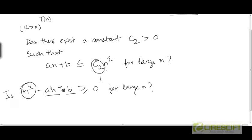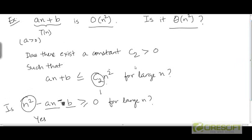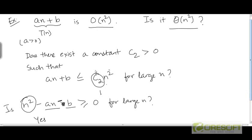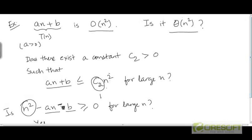Based on very similar arguments that we've used in previous examples, we can claim that n² minus an minus b is going to be greater than 0 for large n. And so we've proven the existence of an upper bound — an plus b is bounded from above by a constant multiple of n², and therefore an plus b is O(n²).